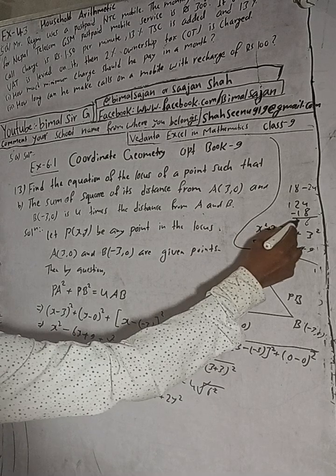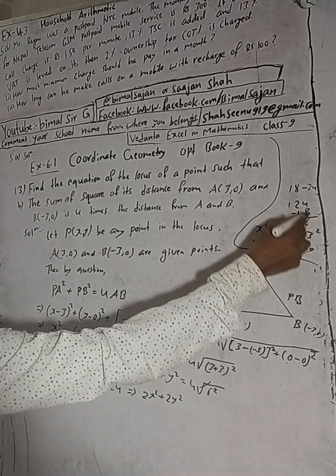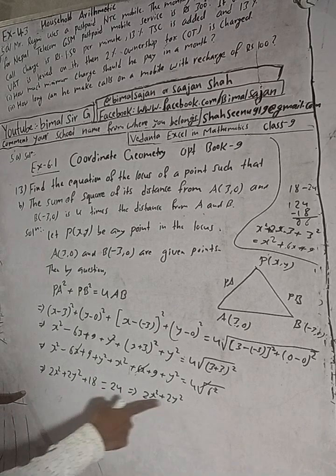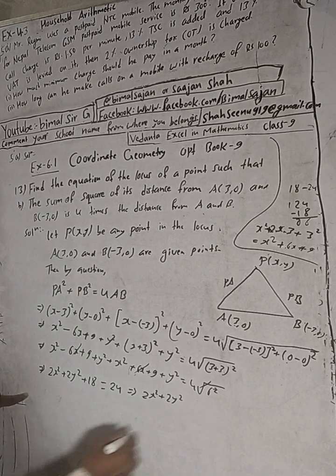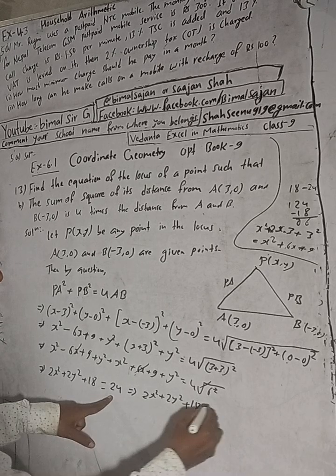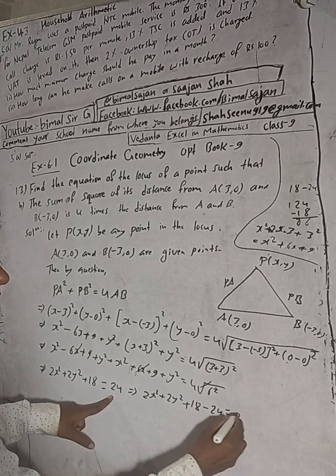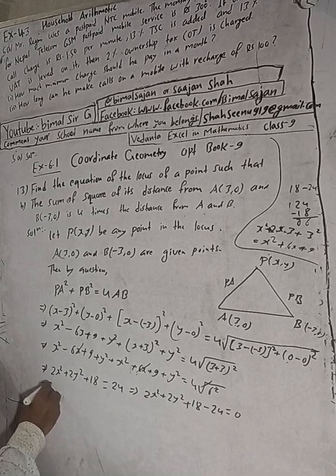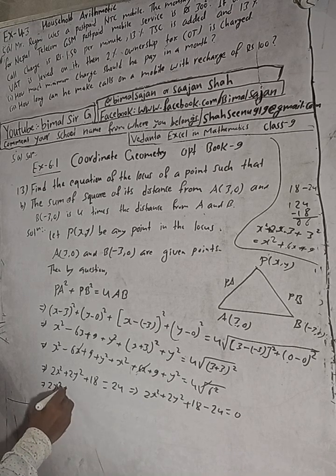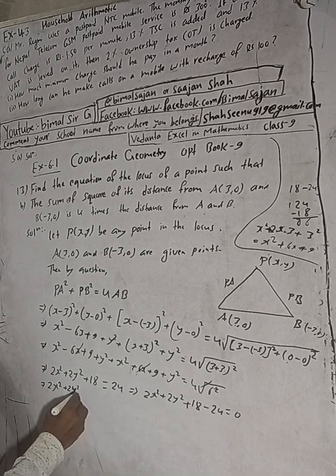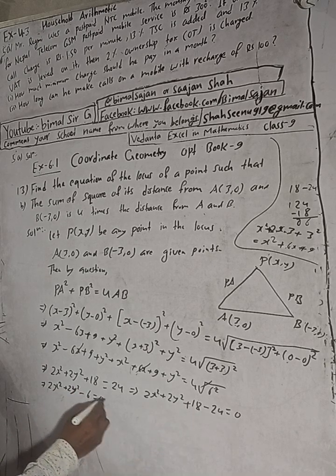So 2x² + 2y² + 18 - 24 = 0, which gives 2x² + 2y² - 6 = 0.